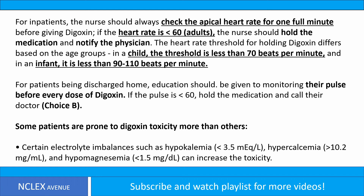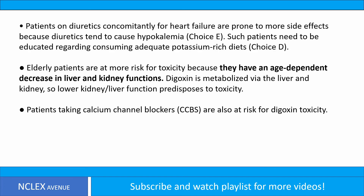Some patients are more prone to digoxin toxicity than others. Certain electrolyte imbalances such as hypokalemia (less than 3.5 mEq per liter), hypercalcemia (greater than 10.2 mg per dL), and hypomagnesemia (less than 1.5 mg per dL) can increase toxicity. Patients on diuretics concomitantly for heart failure are prone to more side effects because diuretics tend to cause hypokalemia — choice E. Such patients need to be educated regarding consuming adequate potassium-rich diets — choice D.